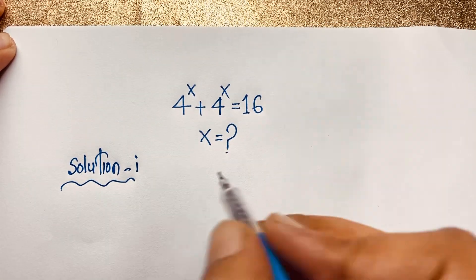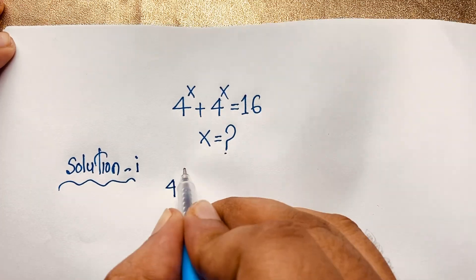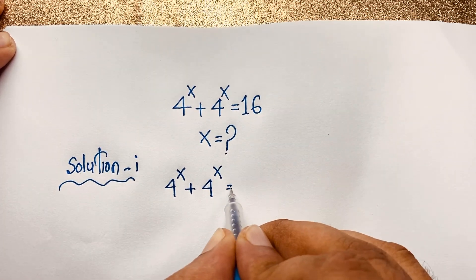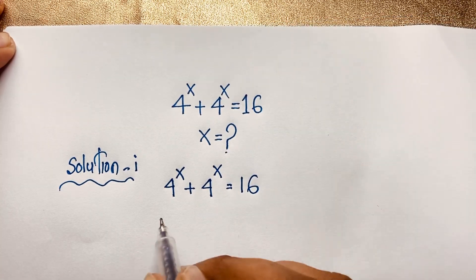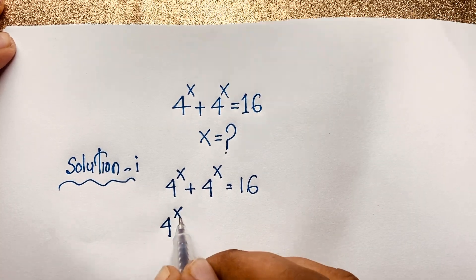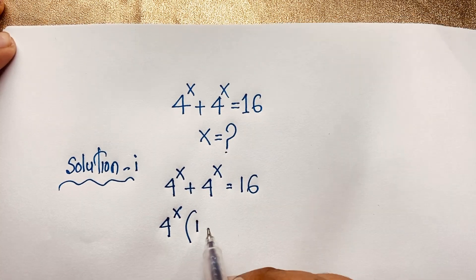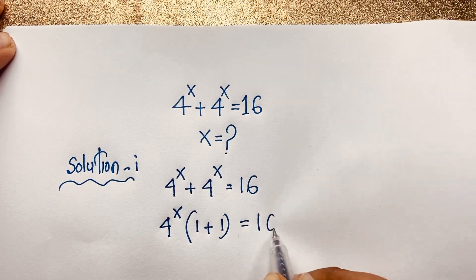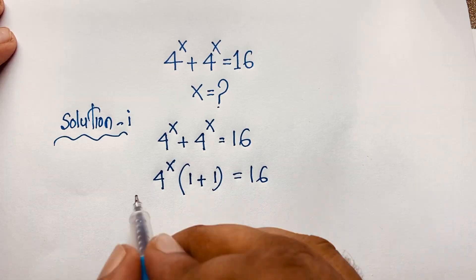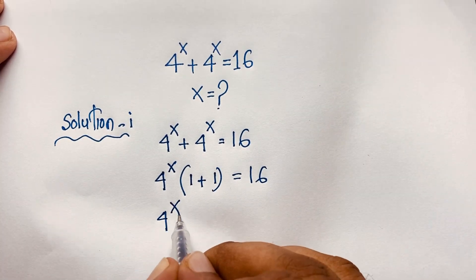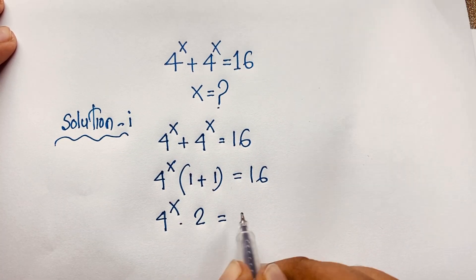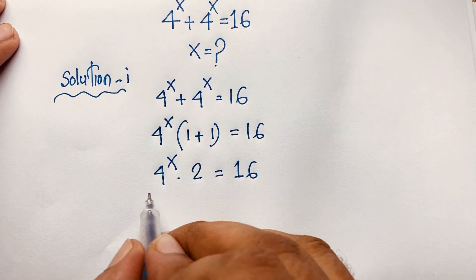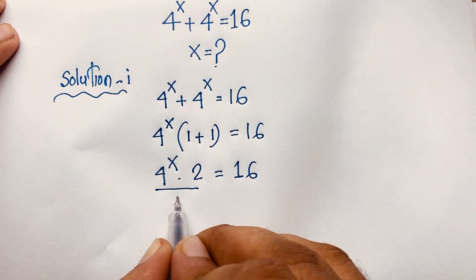First, take the question: 4 to the power x plus 4 to the power x is equal to 16. Here, 4 to the power x is common, so we factor it out. This gives us 4 to the power x times (1 plus 1) is equal to 16, which simplifies to 4 to the power x times 2 is equal to 16.